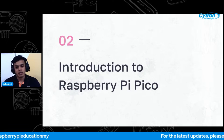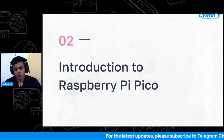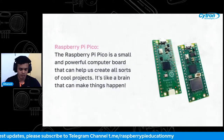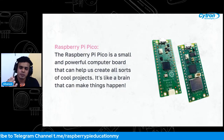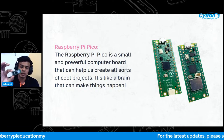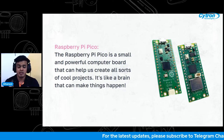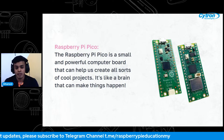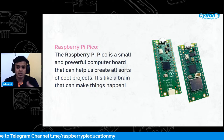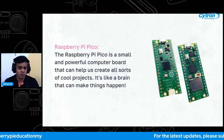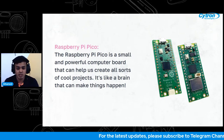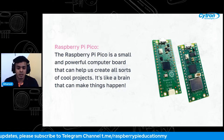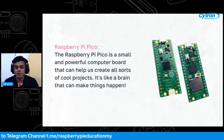Now let's explore the first platform — the Raspberry Pi Pico. This is a small and powerful microcontroller board designed to be beginner friendly, making it a great choice for learning about microcontrollers. It has all the essential components needed to get started. Programming the Pico is straightforward — you can use programming languages like MicroPython or CircuitPython, and there are plenty of resources and tutorials available to help you get started even if you are new to programming.